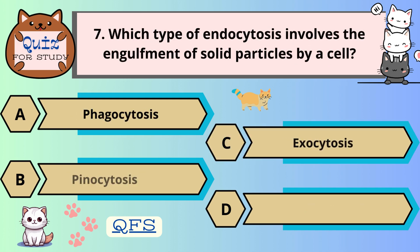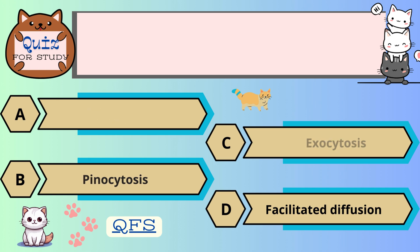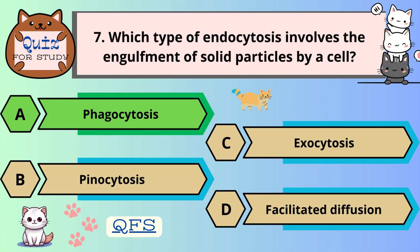Number 7. Which type of endocytosis involves the engulfment of solid particles by a cell? The correct answer is A. Phagocytosis.